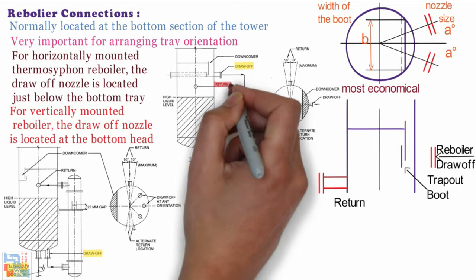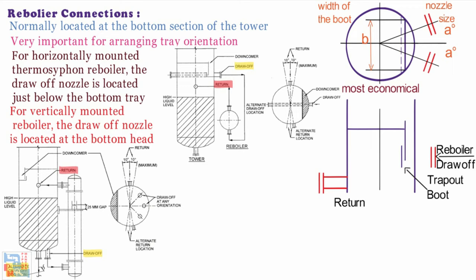For both the systems, the return nozzles are located just above the liquid level. In the plan view, you can see alternative location of return nozzle and draw off nozzles.